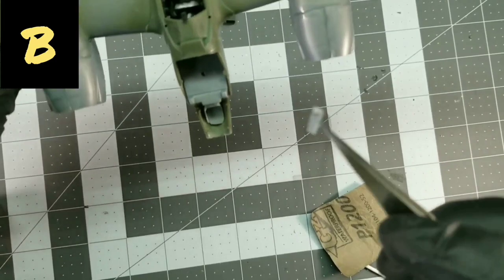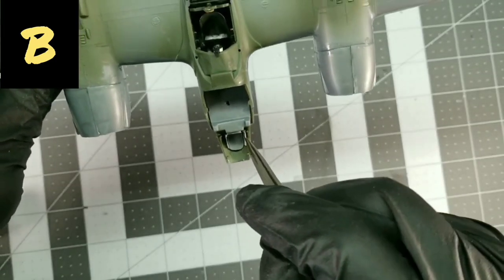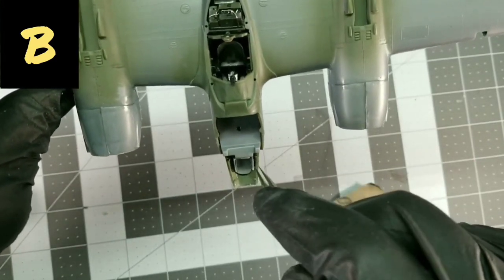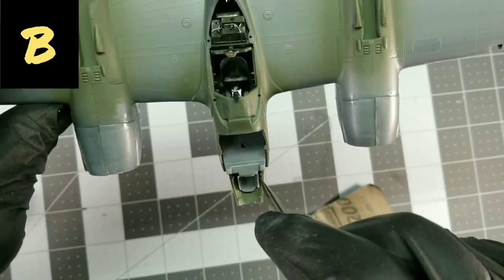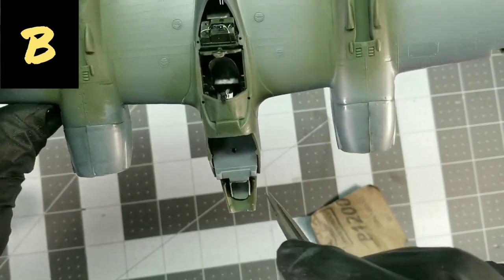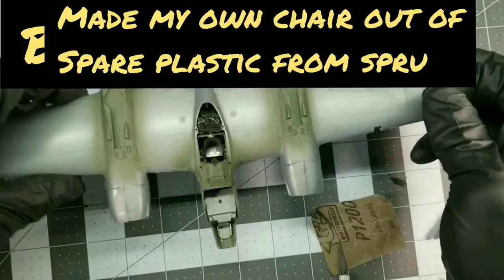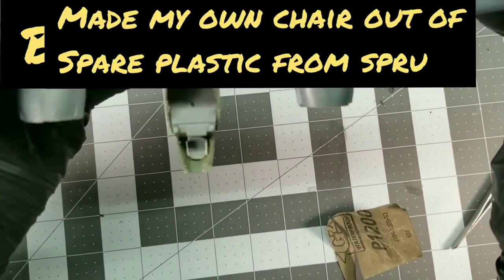And then I took two side panels, little tiny itsy-bitsy side panels, popped those on as like kind of like little armchairs. The seat might be a little bit out of scale, but it looks really good after the fact.